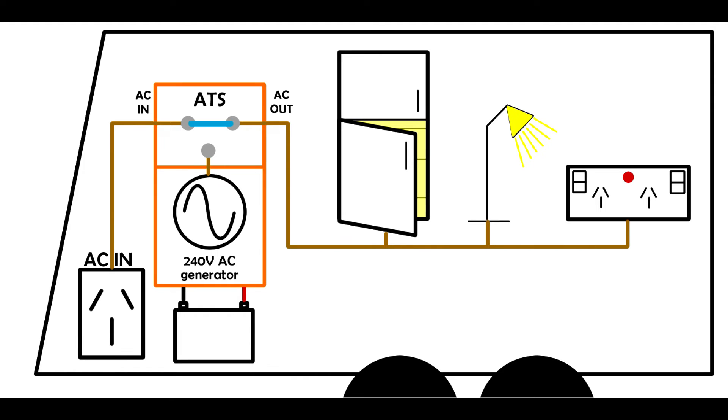But when we disconnect mains power, the automatic transfer switch instantly switches across to the inverter's internal power generator, so your appliances are now being fed their power from the inverter rather than coming in from outside.